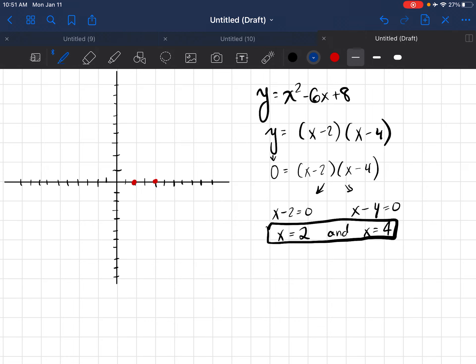My next step is to find the line of symmetry. I'm going to abbreviate it like that. So I know that the equation for the line of symmetry is x equals negative b divided by 2a. In my function up here, I know that a is 1, b is negative 6, and c is 8.